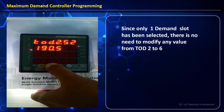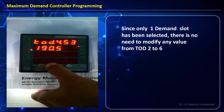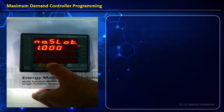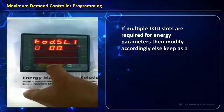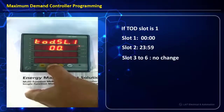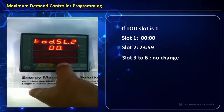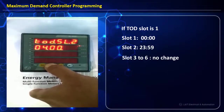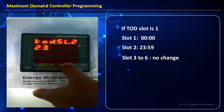Since we have programmed only TOD1 (from 00:00 to 23:59), the remaining TOD slots can be kept as they are. Next we move to the energy slots: the number of slots is set to one, from 00:00 to 23:59. If required, up to 6 energy slots can be configured; in our case we have selected only one. Energy values as per TOD are set from 00:00 to 23:59, with slots 3 to 6 unchanged.